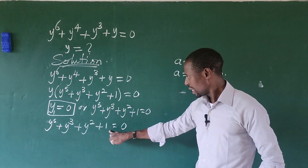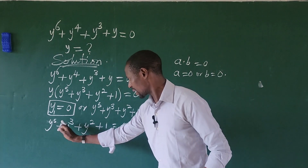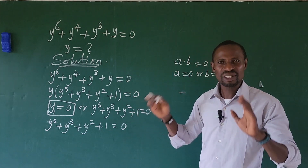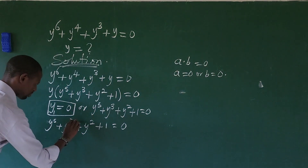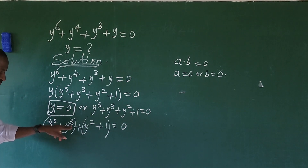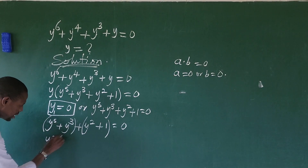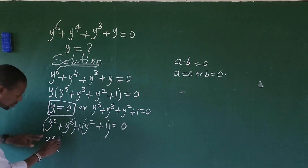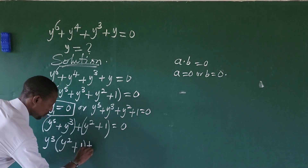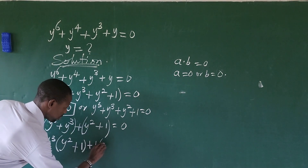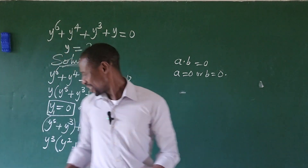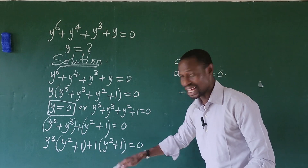Here we are having y² + 1. And if we decide to put this in brackets and factor out y³, we are going to come up with y² + 1 also. So instead of using trial and error, let's factor y³ from the first two terms. We get y³(y² + 1) + 1·(y² + 1) = 0. You now discover that what we have in both brackets is the same.